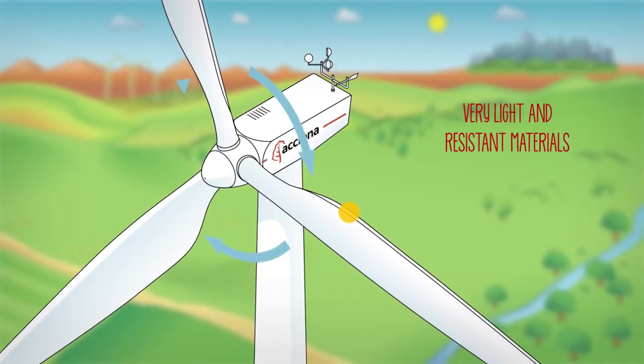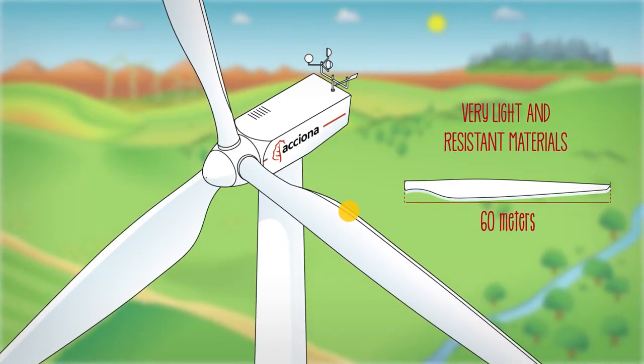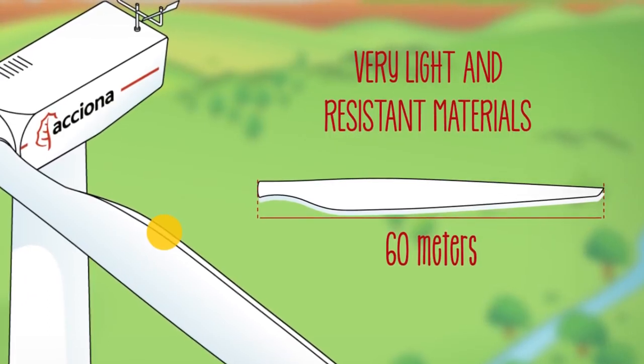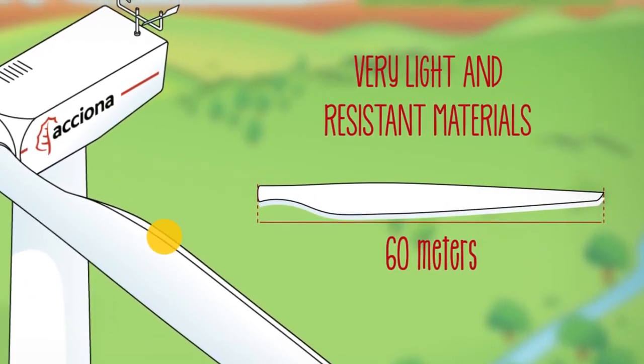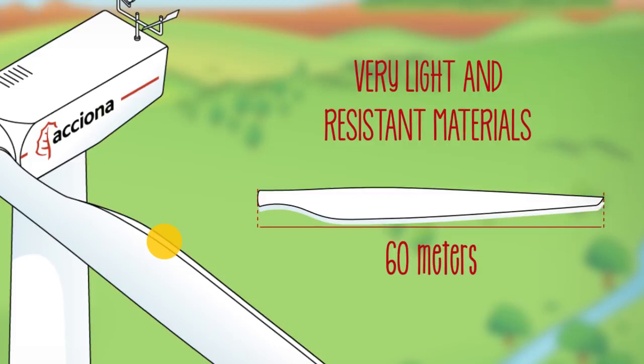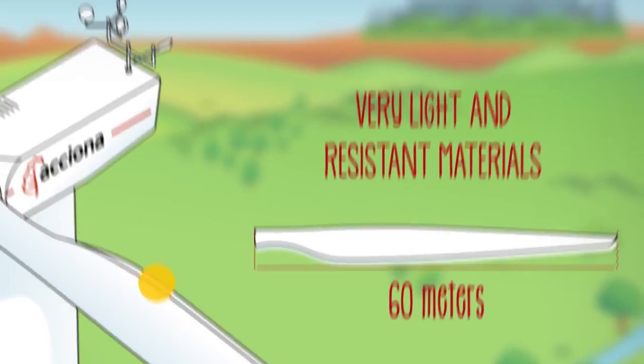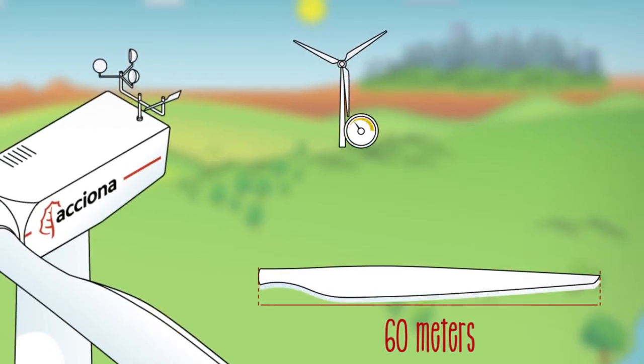They can be as long as 60 meters each and are made of very light and resistant materials for ease of movement. This is why they can produce energy even with very light winds, starting from about 11 kilometers per hour.